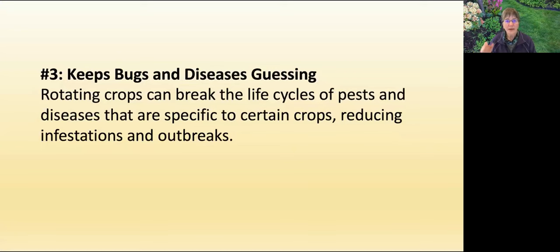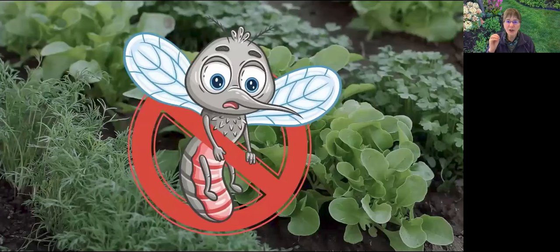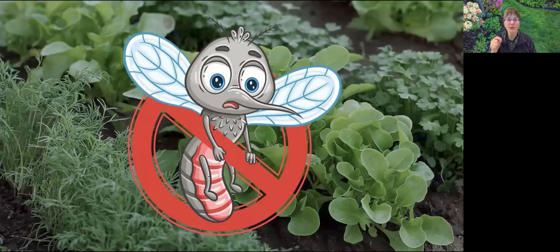Number three: crop rotation keeps bugs and diseases guessing. Rotating crops can break the life cycles of pests and diseases that are specific to certain crops, reducing infestations and outbreaks. Just when pests and diseases think they've got an easy free meal, you switch things up. This is something that Midge now knows is crucial to her success.